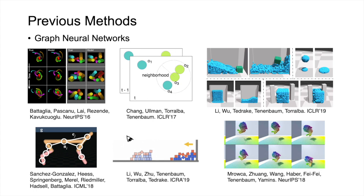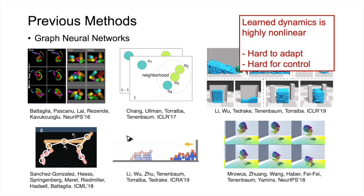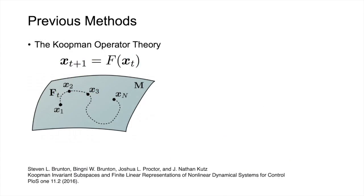Prior methods such as interaction networks use graph neural networks to model the physical interactions between different components. However, the neural dynamics is highly nonlinear, which makes it hard to adapt to environments of unknown physical parameters and challenging to synthesize control signals.